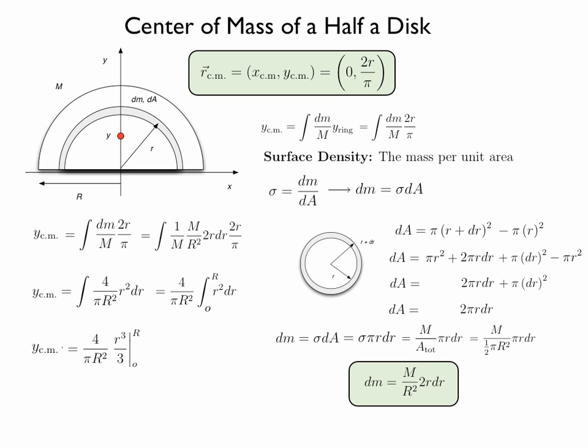The value of that integral is simply r cubed over 3, so the overall expression for the center of mass along the y-axis of the disk becomes 4 over pi R squared times little r cubed over 3, evaluated at the limits 0 and R.